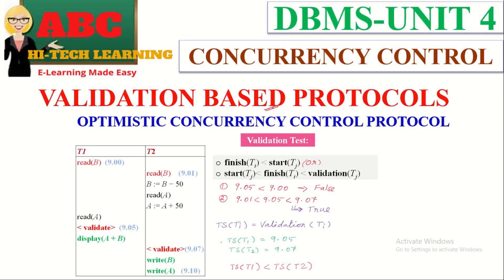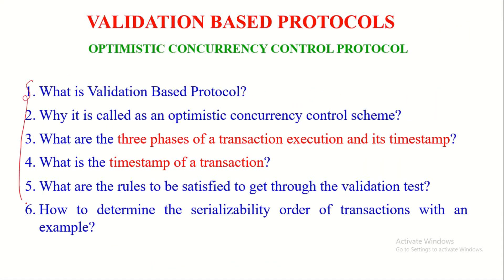Hello viewers, in this video we are going to discuss validation based protocols, which are also known as optimistic concurrency control protocol. These are one of the concurrency control protocols. This lecture covers: what is a validation based protocol and why it is called an optimistic concurrency control scheme, the three phases of a transaction and its timestamps, the rules to be satisfied to pass the validation test, and how to determine the serializability order of transactions with a given example schedule.